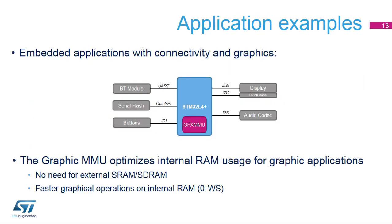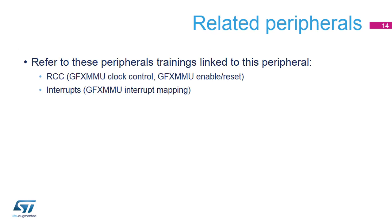Wearable applications require low power management functions together with a high-quality user interface. In this context, the CHROM GRC optimizes the internal RAM usage, making it no longer necessary to add an external component for SRAM or SDRAM. The graphical content creation is much faster thanks to the internal zero-wait-state RAM. You can refer to peripheral training slides related to RCC and interrupts.